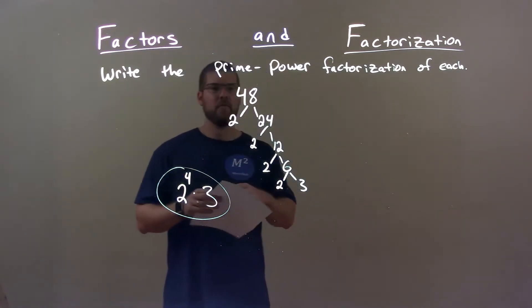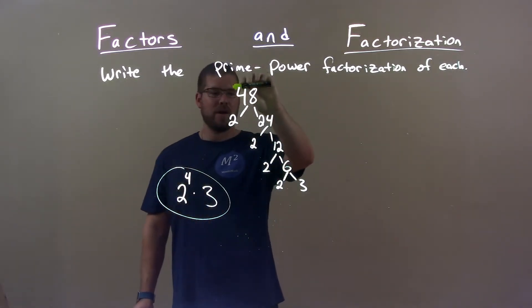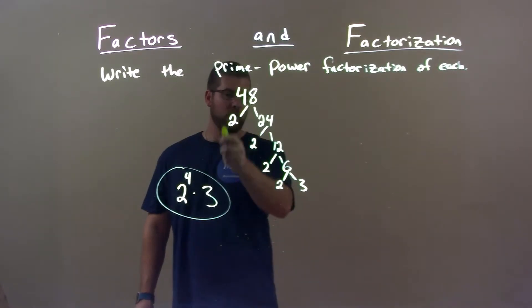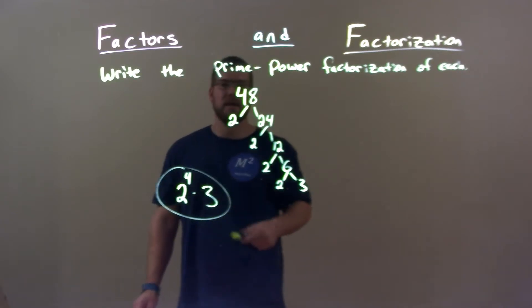So quick recap. We're given 48, and we're at the prime power factorization of it. Well, I did a prime factorization of 48, and then grouped them together, the 2's and the 3. So our final answer is just 2 to the 4th power times 3. That's great.